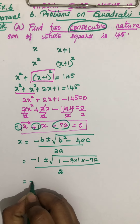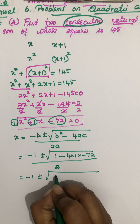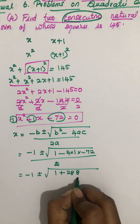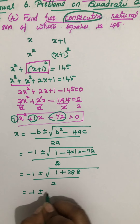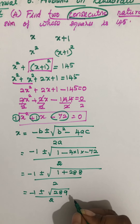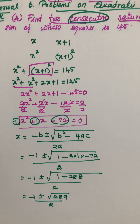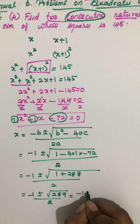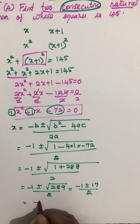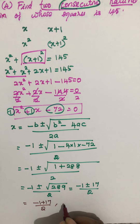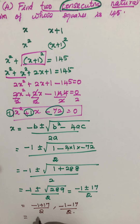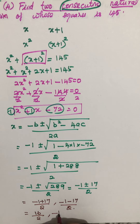This becomes minus 1 plus or minus root of 1 plus 288, divided by 2 — that is, root of 289 divided by 2. The square root of 289 is 17. So x equals minus 1 plus or minus 17, divided by 2. Taking the two cases: minus 1 plus 17 over 2 gives 16 over 2, and minus 1 minus 17 over 2 gives minus 18 over 2.